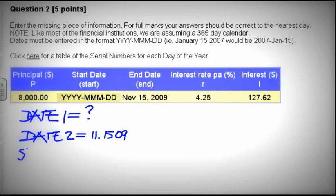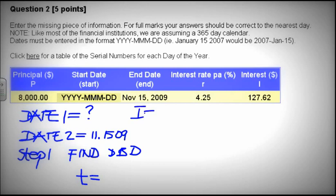$467.03. Question 2: Date 1 is unknown, Date 2 is given to us as November 15, 2009. So in the first step we are going to find the number of days between those two dates. One is known, the other one is unknown. T is going to be equal to, from the formula I is equal to P times RT.